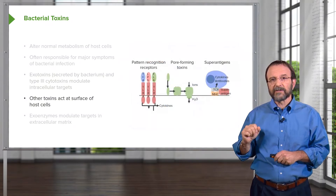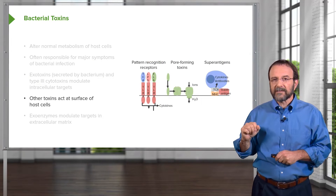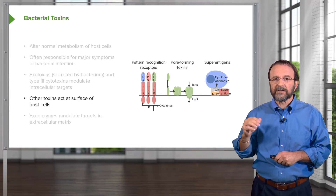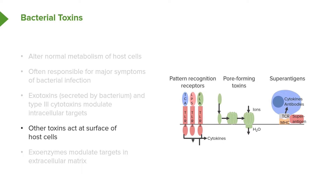Other toxins produced by bacteria act at the surface of host cells. Some of them bind to pattern recognition receptors and induce the production of cytokines, which have lethal effects. There are also pore-forming toxins, which make holes in cell membranes and cause cells to die. Finally, there are toxins called superantigens that bind to T cell receptors and major histocompatibility receptors and induce the synthesis of many toxic cytokines. There are also proteins called exoenzymes produced by bacteria that modulate targets in the extracellular matrix.